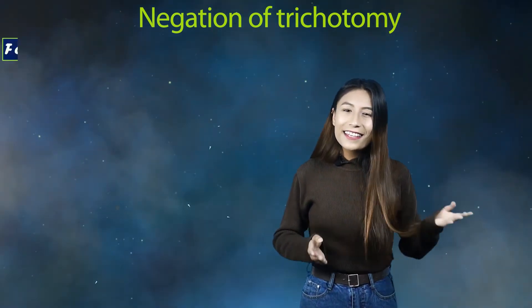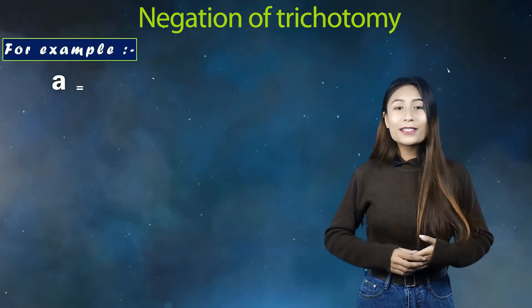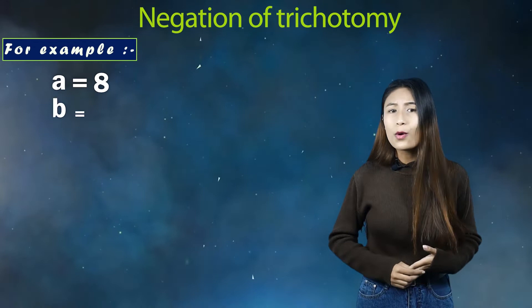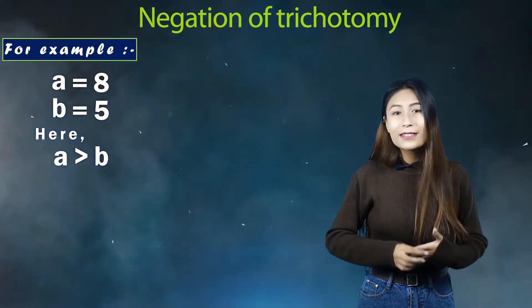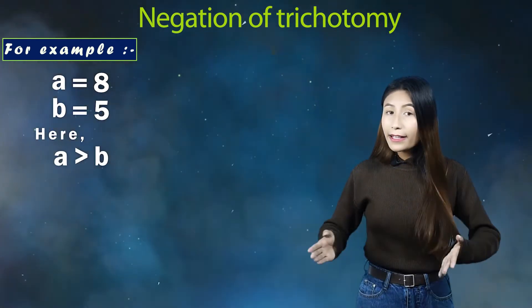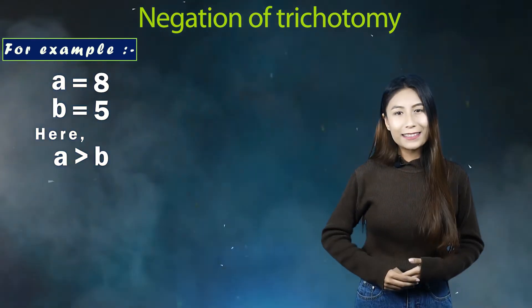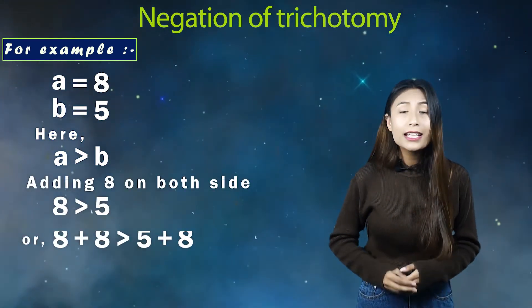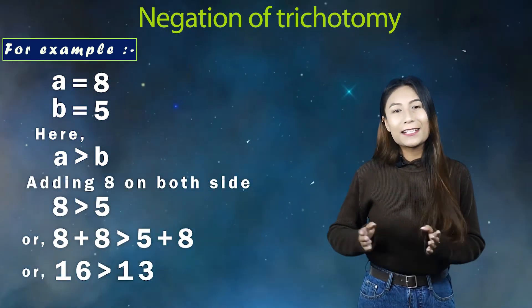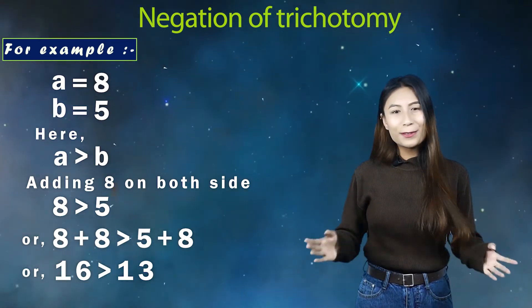Confused? Take this example: a equals 8 and b equals 5. Here a is greater than b. Add any equal number on both sides, example 8. It becomes 16 greater than 13, which is absolutely true.